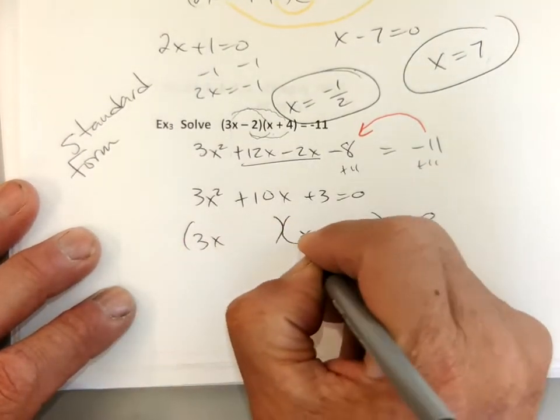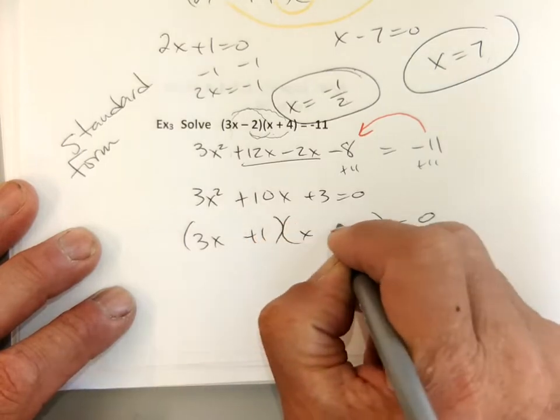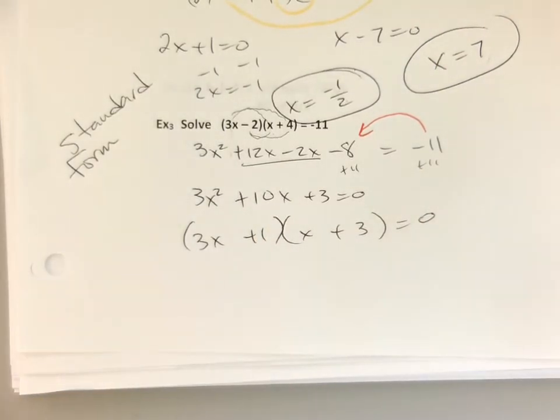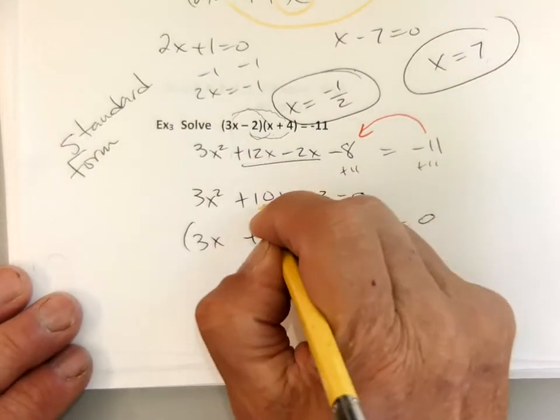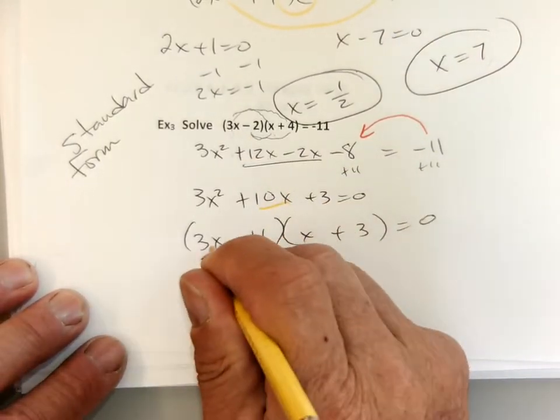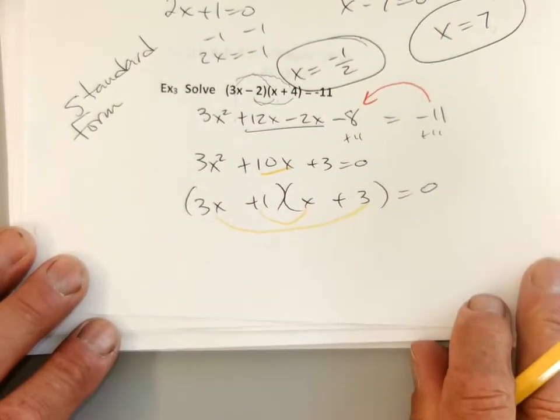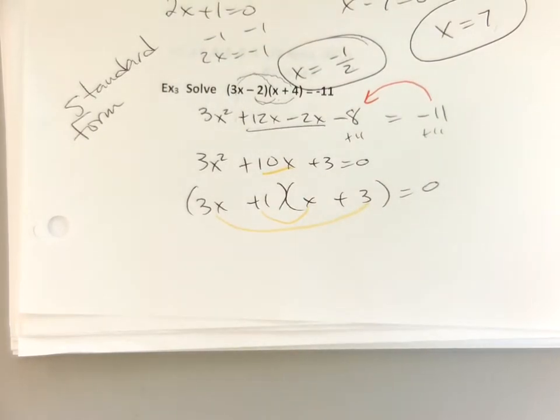3x, x, plus 1, plus 3, right? And again, you can check for the 10. The 10 comes from the double smiley. There's my 9x, 1x, which makes a 10. But we're not done, because we're solving it. We're not factoring, we're solving.